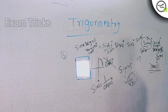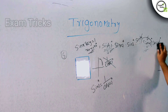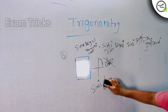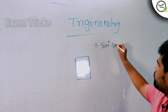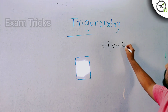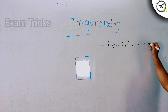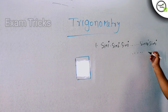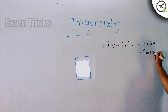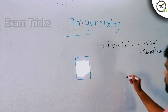Let's take another type of tricky question. If you just observe it quickly, you might miss the trick — but if you observe carefully, it becomes easy. The question is: sin1° · sin2° · sin3° · ... · sin90° · sin91° · ... · sin269° · sin270°.